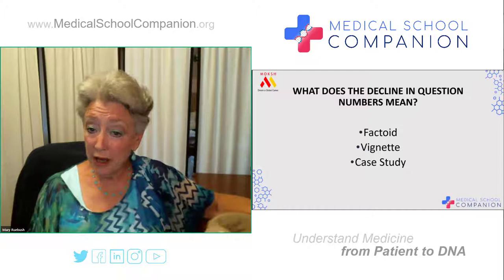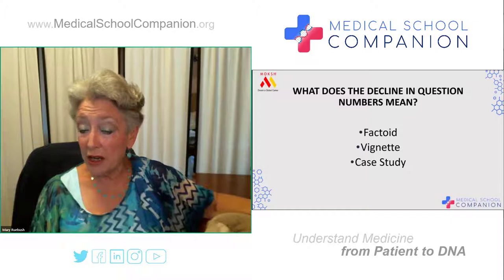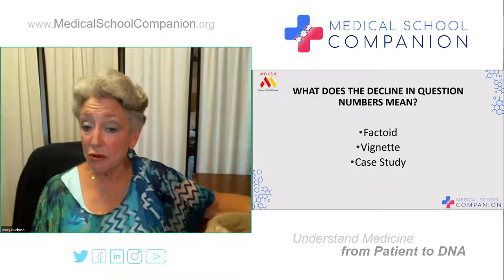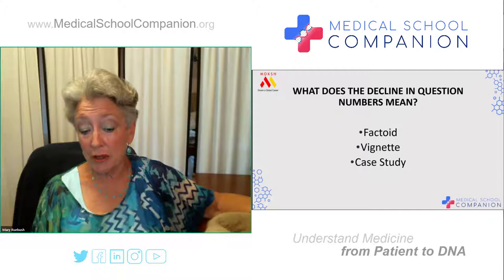They then moved into what I call vignettes, which are short case histories. They tend to include most of the information that you would want to see. The first step would be to make a diagnosis of the patient, and then they'll ask you something about how that disease process occurs — different styles of questions following a very short paragraph-long history.